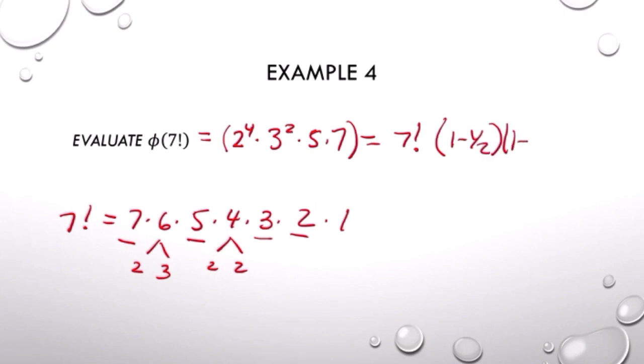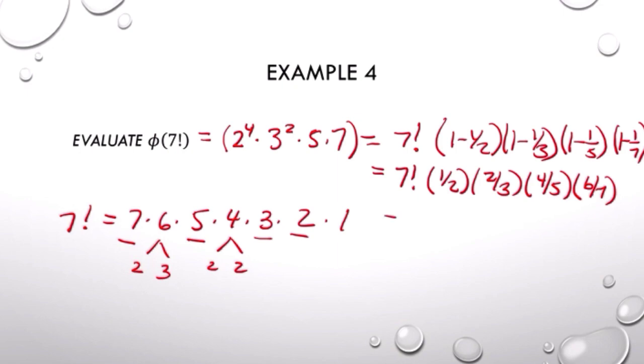So phi of 7 factorial is given here. That simplifies to 7 factorial times 1 half times 2 thirds times 4 fifths times 6 sevenths. And when you calculate that out, you'll get 1,152.